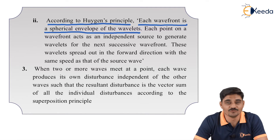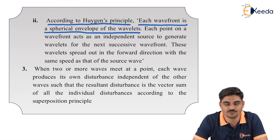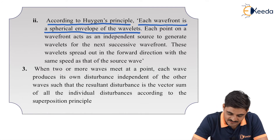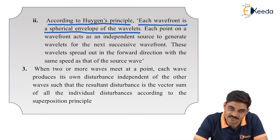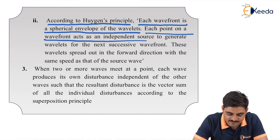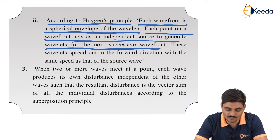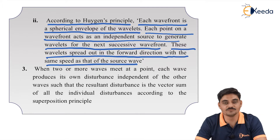Each point on the wavefront is called a wavelet. Each wavefront is a spherical envelope of the wavelets, and each point on a wavefront acts as an independent source to generate wavelets for the next successive wavefront. These wavelets spread out in the forward direction with the same speed as that of the source.